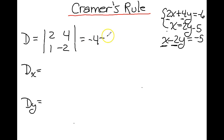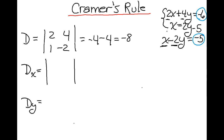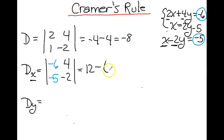Now let's find D sub x. For D sub x, we use the same determinant except our x column is replaced with the numerical values of our equations. I replace x with the answer of the first equation and the numerical value of the second equation; the y column stays the same. So when I calculate that, I get 12 minus negative 20, which is 12 plus 20 equals 32.